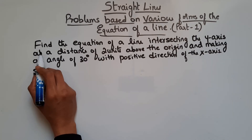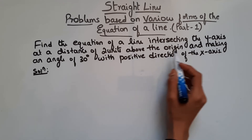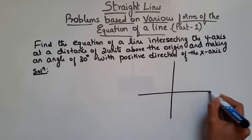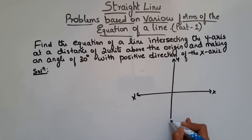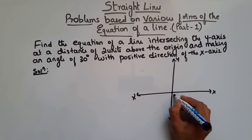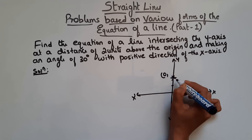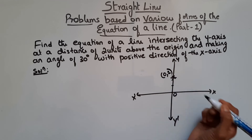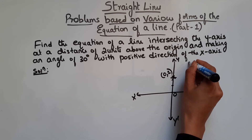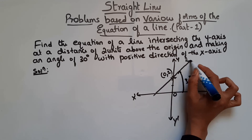So now let's see this problem. Find the equation of a line intersecting the y-axis at a distance of 2 units above the origin and making an angle of 30 degrees with the positive direction of the x-axis. The line intersects the y-axis at 2 units above the origin, so that point is (0, 2). The line makes an angle of 30 degrees with the positive x-axis.